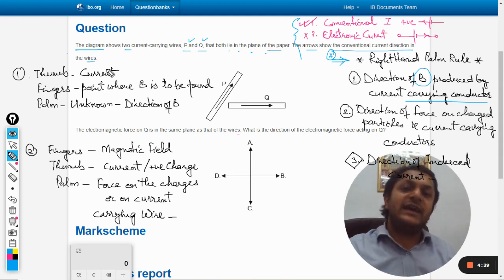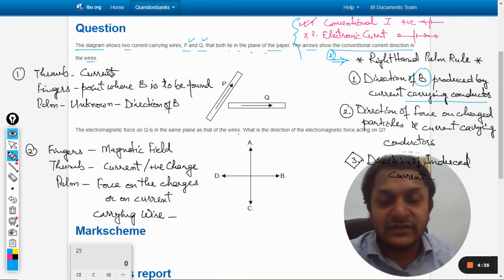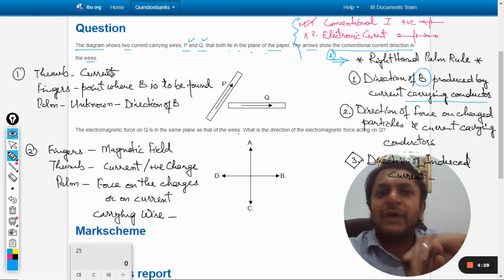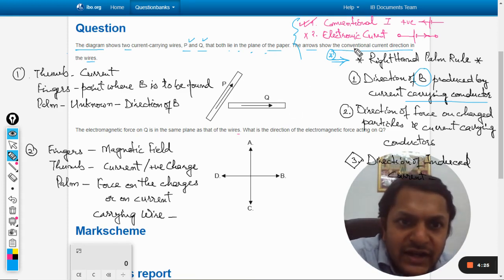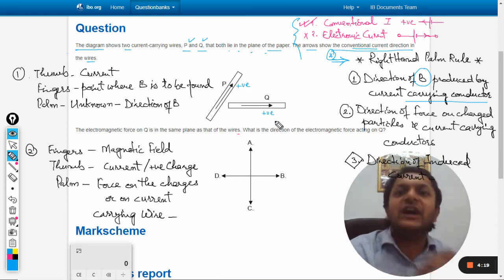First of all, I want to point out that there are two types of currents: one is known as conventional, another is known as electronic current. In conventional current, the current is moving from the positive terminal of the battery, so it shows the direction of the positive charge. When it is written conventional current, it means the direction of the movement of the positive charges inside the wire is given.